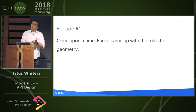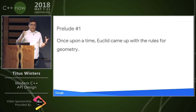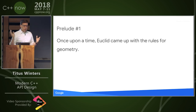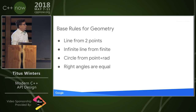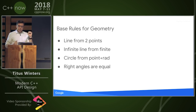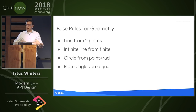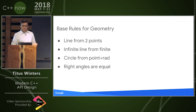A prelude. You know how in a good novel you get started with something that makes absolutely no sense until three quarters of the way through? Prelude number one. Once upon a time, Euclid came up with the rules for geometry — things like you can draw a line segment between two points, extend a line segment into an infinite line, draw a circle from a point and a radius.